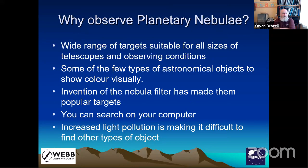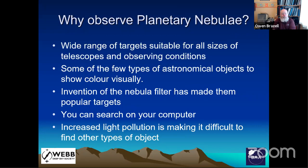So why would we want to observe planetary nebulae? There's a wide range of targets suitable for all sizes of telescope and observing conditions. There are some of the few types of objects to show colour. The invention of the nebula filter in the early 1980s made them a popular target. If you're stuck inside and don't want to go out, you can still search for planetary nebulae on your computer. And in certain cases, light pollution is making it difficult to find other types of objects. Here we have an example of the kinds of telescopes one could use, from a small short-tube 80mm refractor up to very large Dobsonians.